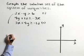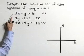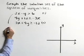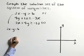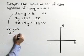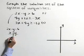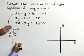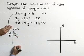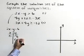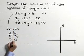Let's start by graphing the boundary lines for each of these. For the first inequality, the boundary line is 2x minus y equals 6. Using a t-table to generate points: if x is 0, then negative y is 6, or y equals negative 6. And if y equals 0, then 2x is 6, or x equals 3.